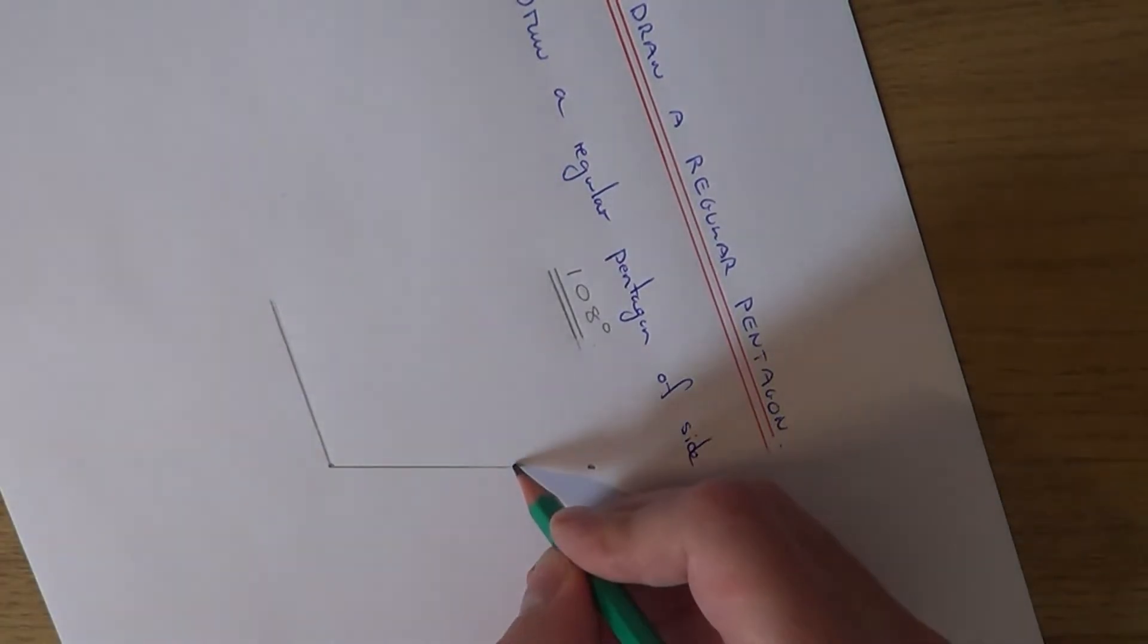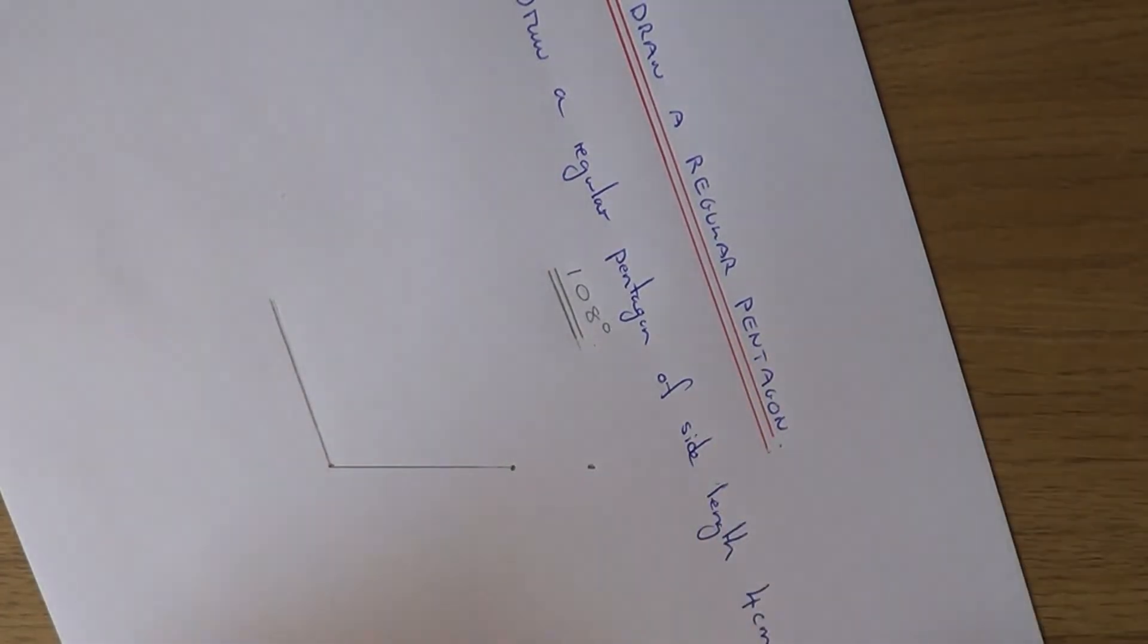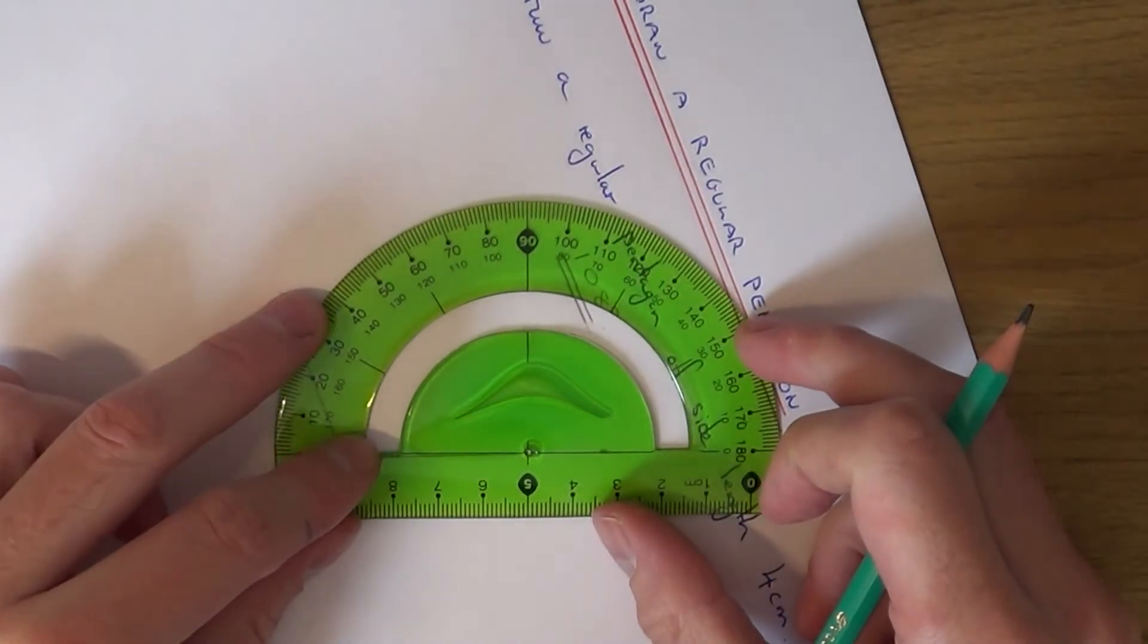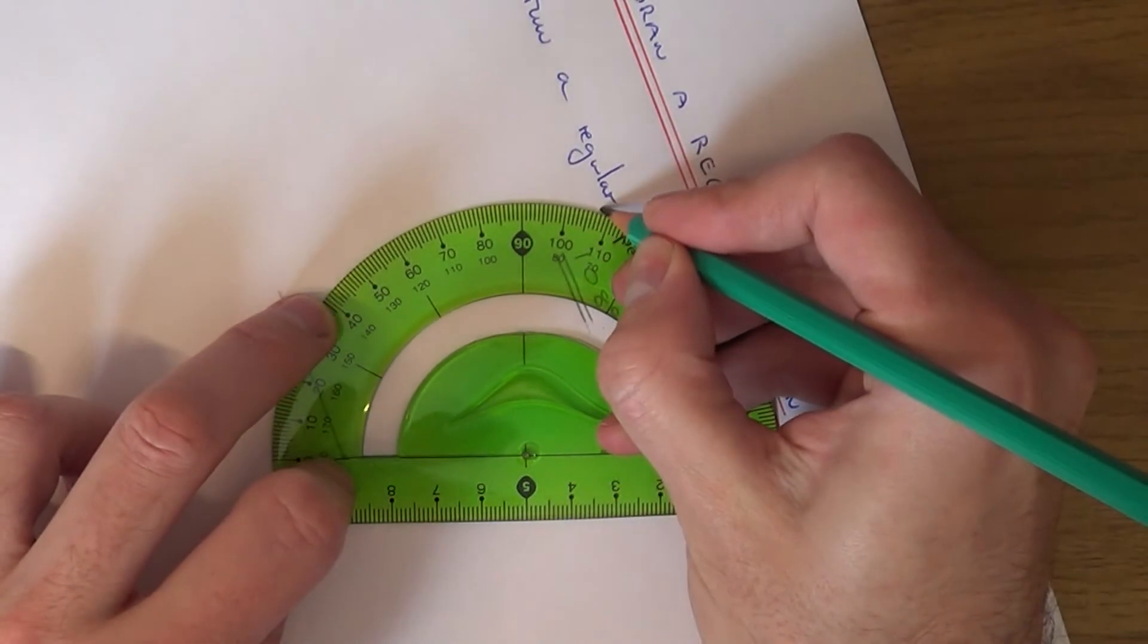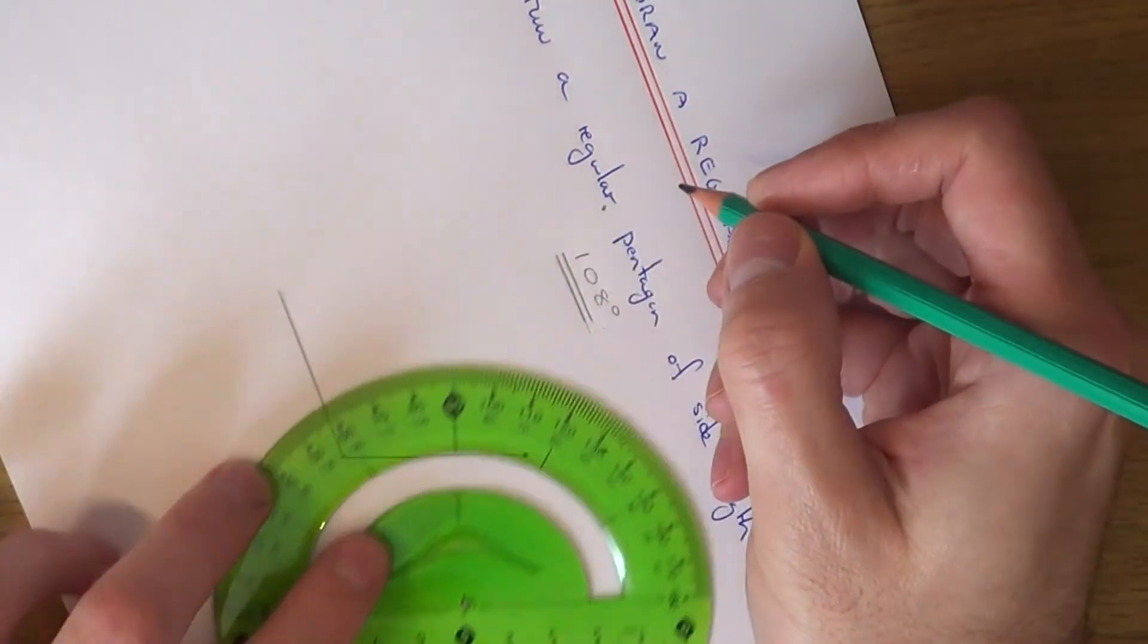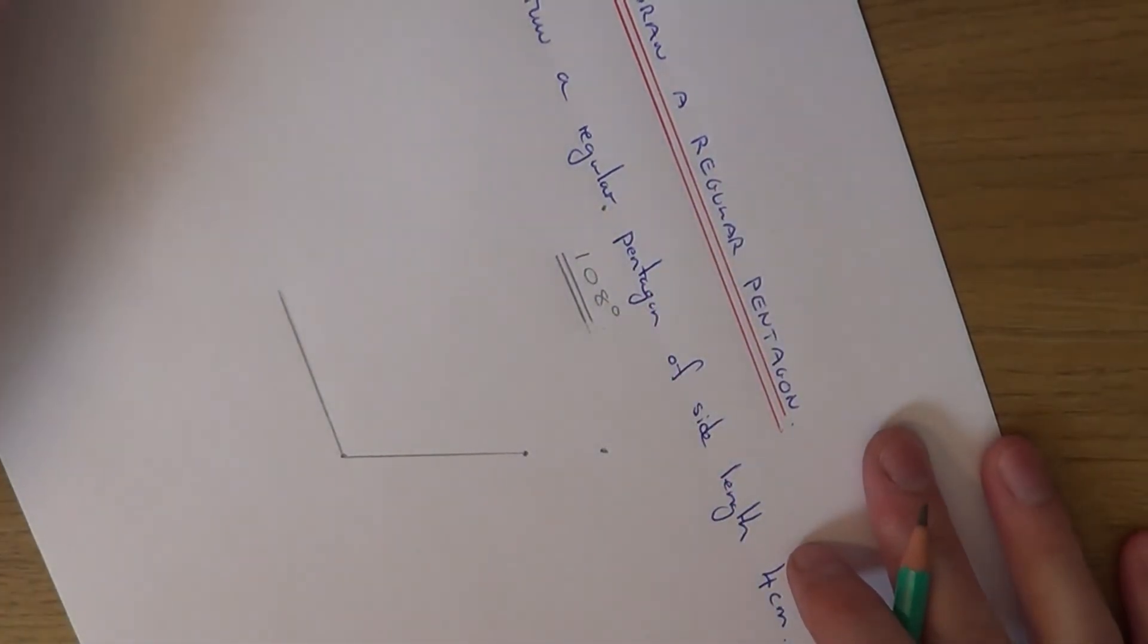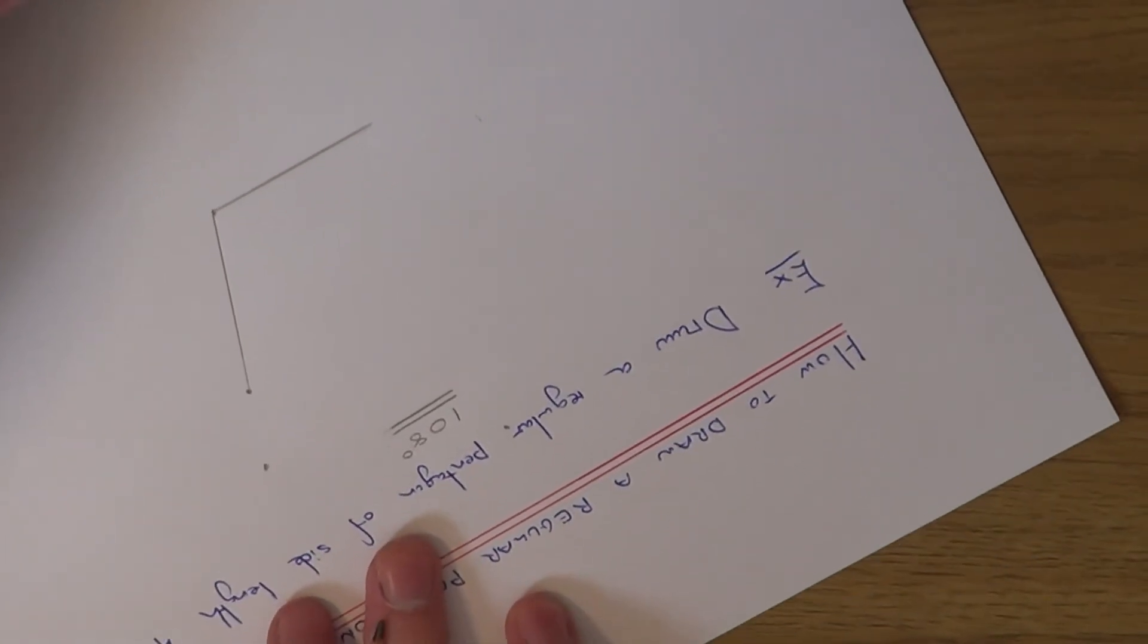So we now need to move, get our protractor and measure the next angle. So our next one again is 180 degrees. So mark it here. So again we just need to now make this line four centimetres long.